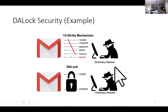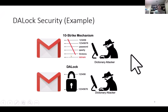Let's illustrate the performance of DA-Lock under two scenarios. In the first example, if the authentication server adopted a 10-strikes policy, then the attacker will successfully crack the user's password on guess 7. By contrast, DA-Lock will quickly lock down the user's account after just two very popular password guesses. In this case, the attacker won't successfully crack the user's password.